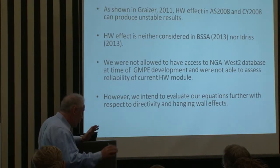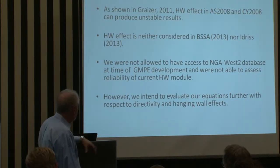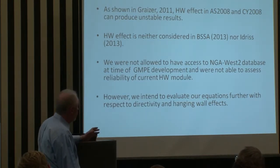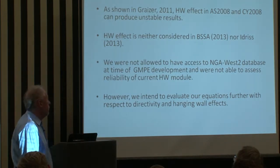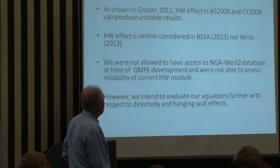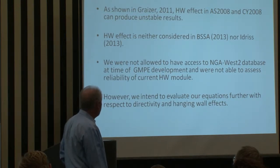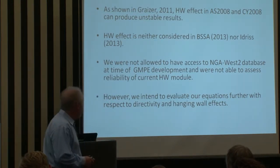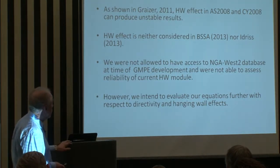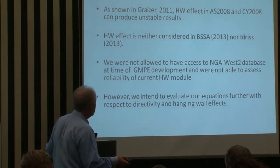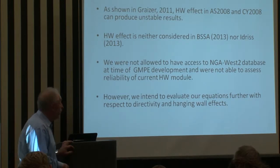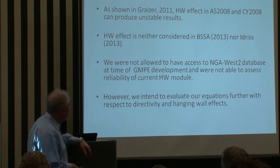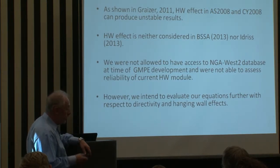Regarding hanging wall effect, I have to say this: we were not allowed to participate in NGA West 2, and we were not given access to the NGA West 2 database and information at the time when it was developed. I specifically asked a few times and was told no — no other participants except whatever was decided before. I previously tested two models. When I was an official reviewer from CGS working in California, I found that the Abrahamson and Silva model and the Chuen Yang model with their hanging wall effect of 2008 sometimes produced unreliable results.